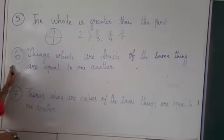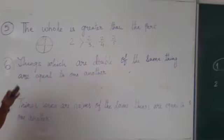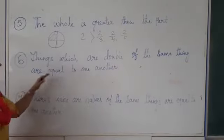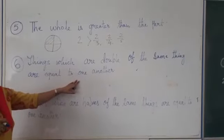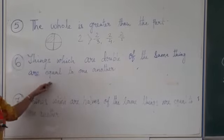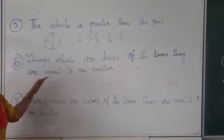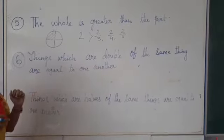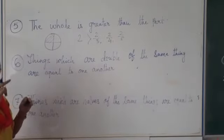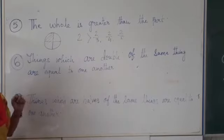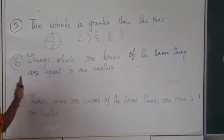The sixth axiom is things which are double of the same thing are equal to one another. You can connect this with the first one. Now, if two things are equal to the third thing, they both are equal to, you remember, A is equal to B and C is equal to B. So, A is equal to C. This was what I have explained.